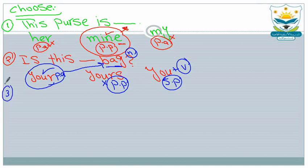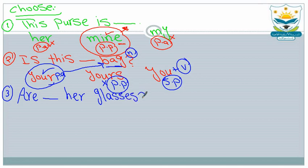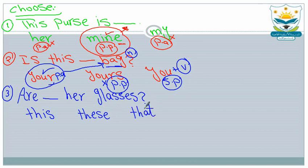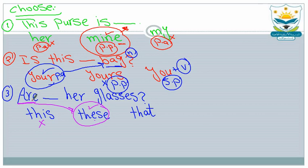Number three: '___ are hair glasses' — this, these, or that? 'Is' with 'this' is wrong. 'These' is the correct answer because we use 'these' or 'those' with plural and 'are.' 'That' is also wrong because we use it with 'is' for singular.